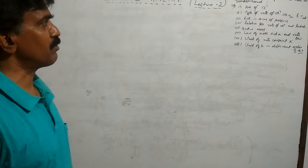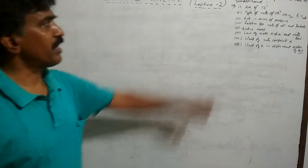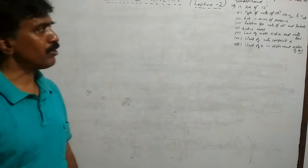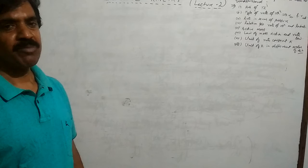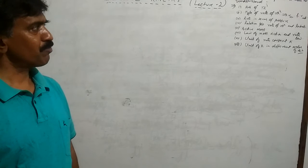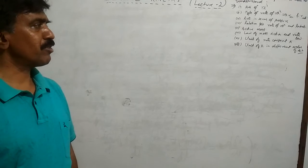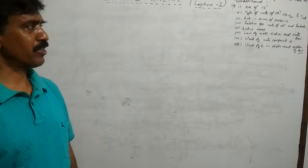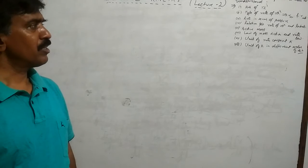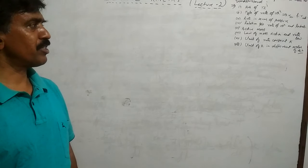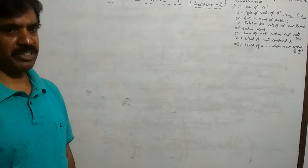I think after watching this video lecture, you will be able to understand: number one, rate of reaction; types of rate of reaction, that is average rate of reaction and instantaneous rate of reaction; rate in terms of pressure; relation between rate of reaction and products; active mass; law of mass action, rate of reaction and rate law; and unit of rate constant k; and unit of k in dependent order of reaction.